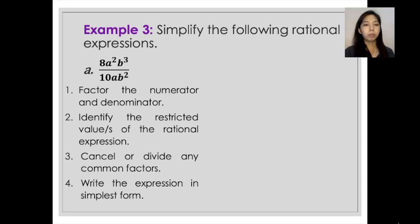We have 8a squared b cubed over 10ab squared. So first step is to factor the numerator and the denominator. So from this expression, it would now become 2 times 4 times a times a times b times b times b in the numerator, and 2 times 5 times a times b times b in the denominator.